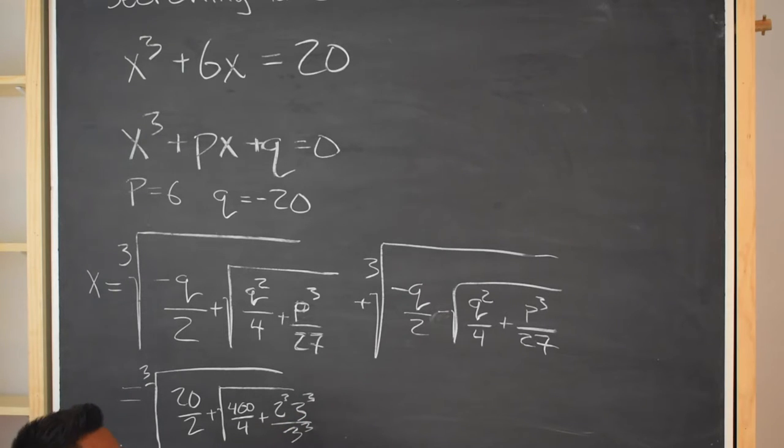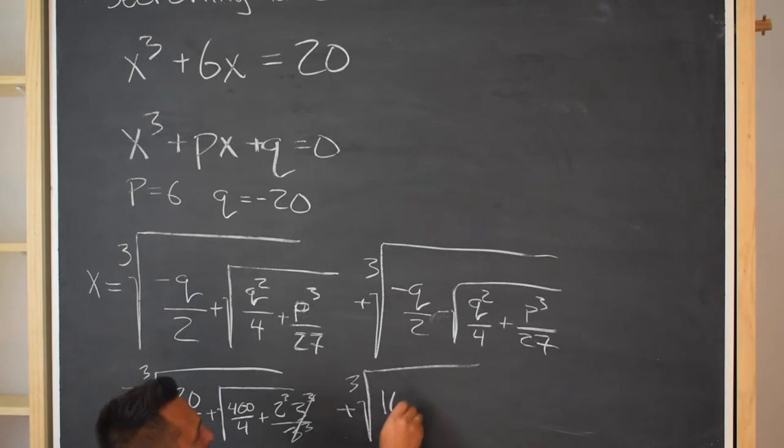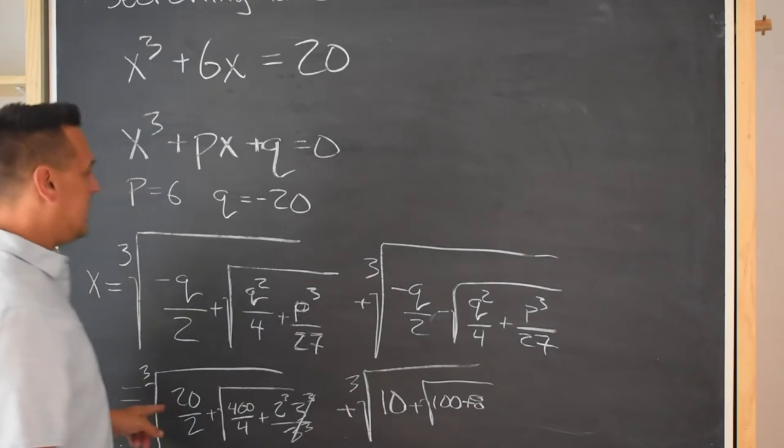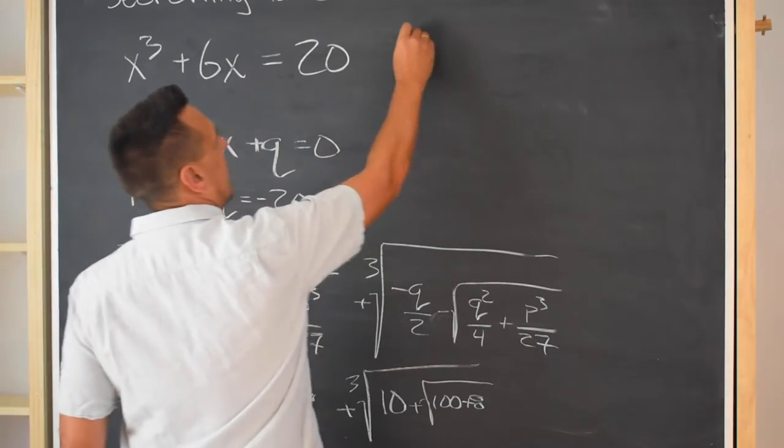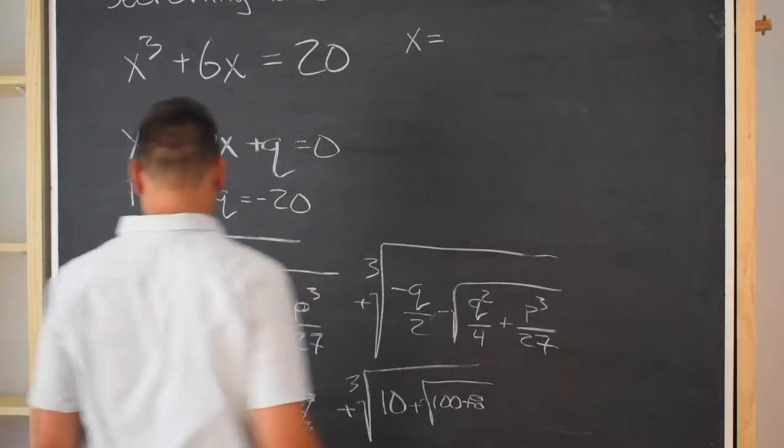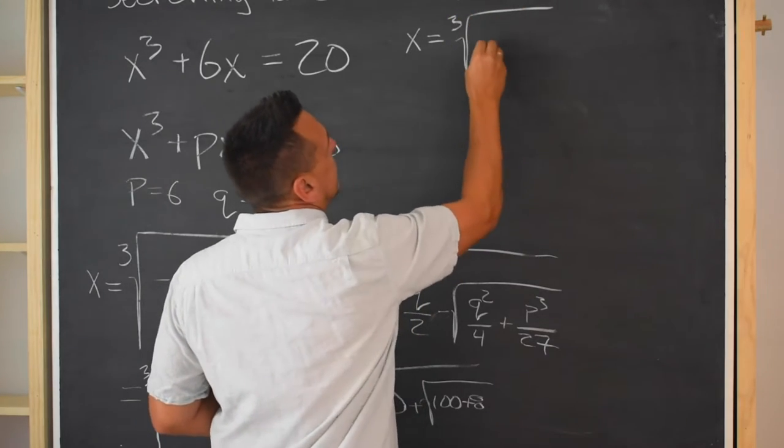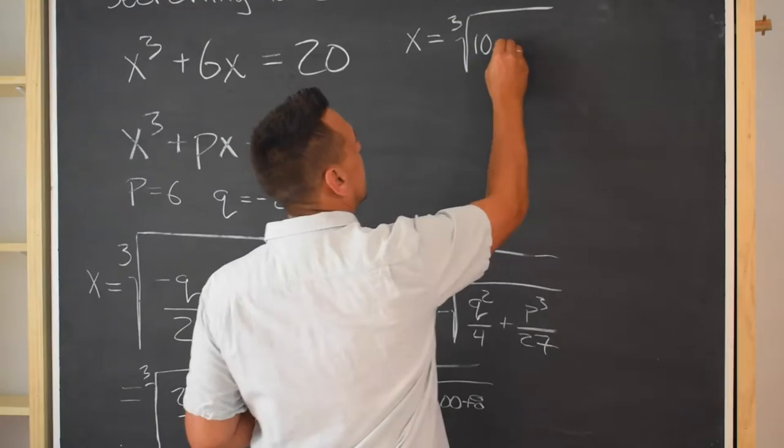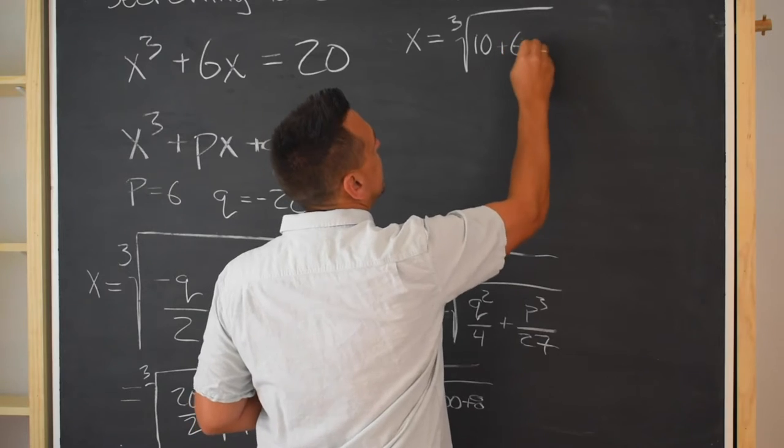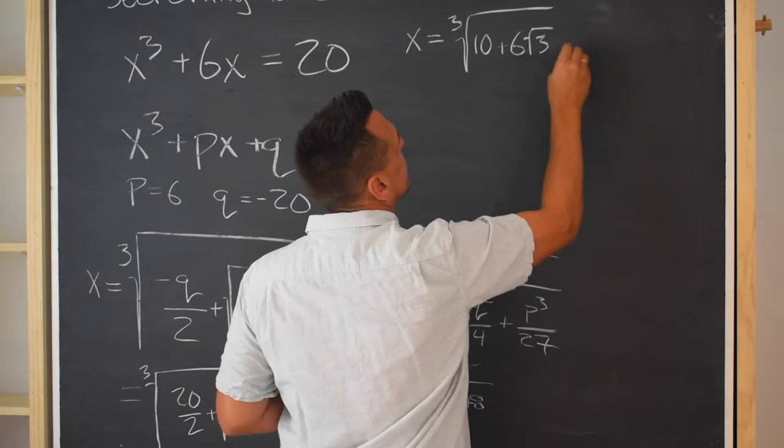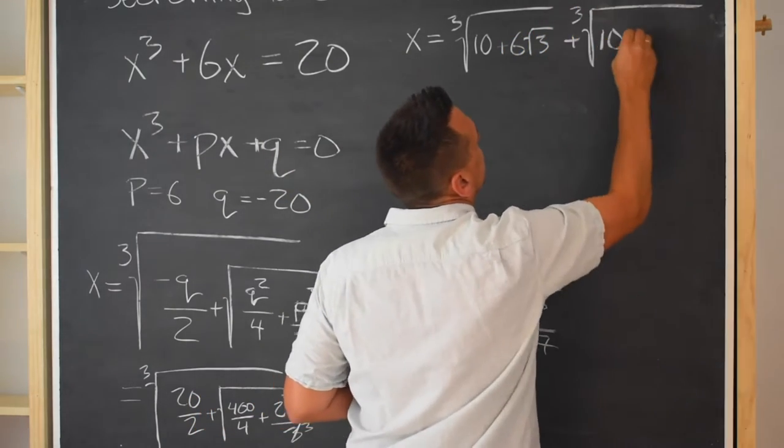Alright, I can plug and chug, right? Like, no big deal. I'm just going to plug that in. So, I'm going to get the cube root of q is negative 20, over 2, and then square root, negative 20 squared is 400, over 4, and then p is 6. Instead of trying to figure out what the heck 6 cubed is, like, I'm not that smart. What I know, though, is that 27 is 3 cubed, and 6 is made of 2 times 3.